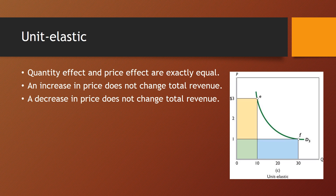The first example is unit elastic. With unit elastic demand, the change in quantity demanded over the change in price equals one, so the quantity effect and price effect are exactly equal. Looking at this, going from point E to point F — at point E, the price is three dollars and quantity demanded is ten, so total revenue is three dollars times ten, which equals thirty dollars.